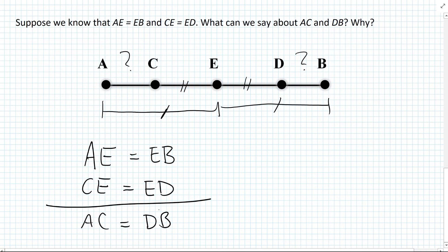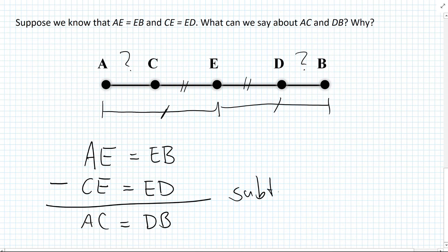If you think about what we're doing here, we're actually subtracting. For example, if you take segment AE and subtract segment CE from it, you end up with segment AC. Similarly, if you subtract segment ED from segment EB, you end up with segment DB. And that's basically the subtraction postulate.